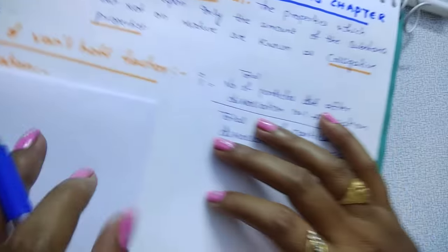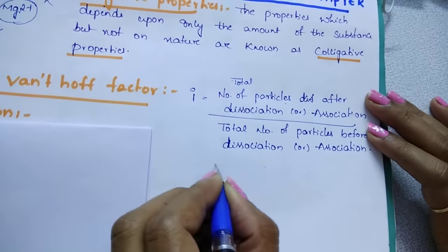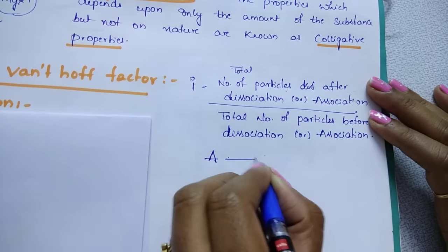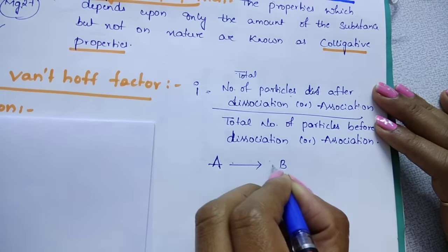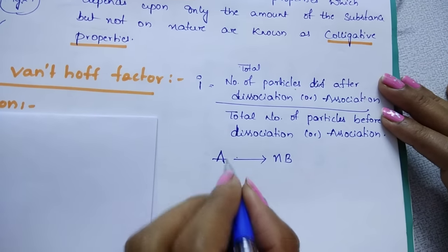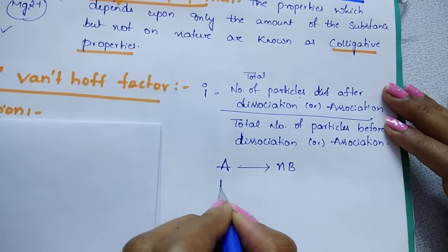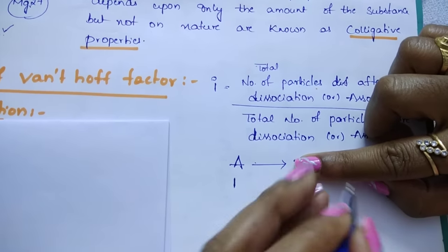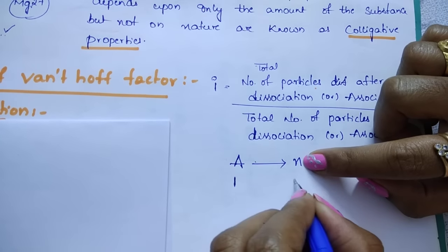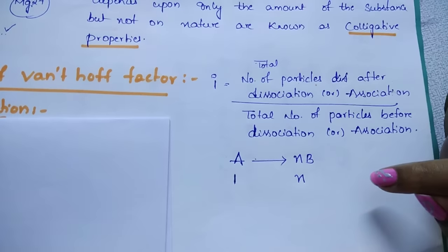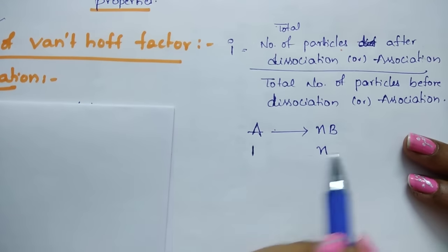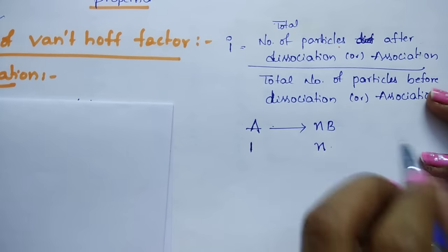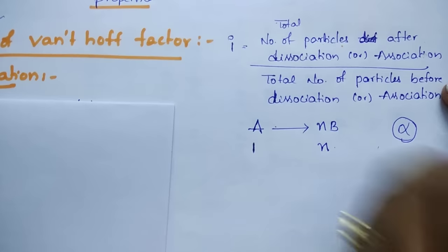Now let us discuss the derivation for dissociation. Suppose 1 mole of A is there and it dissociates to give N moles of B. Initially, there is 1 mole of A and 0 moles of B when reaction has not started. When the reaction starts, N moles of B are formed. So 1 mole of A is converting into N moles of B. One important thing here is alpha — the degree of dissociation.